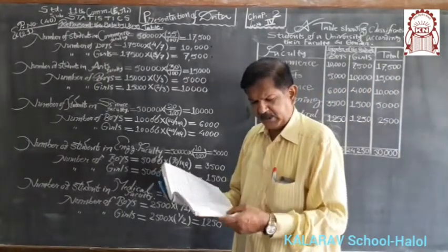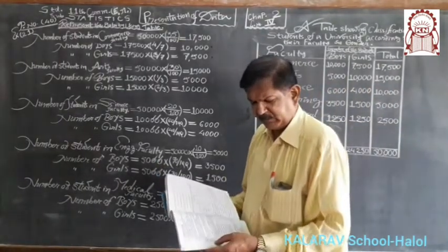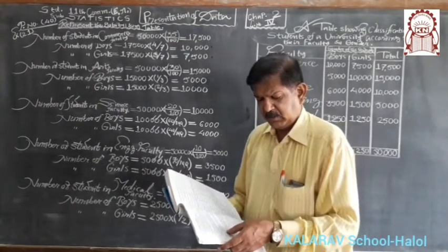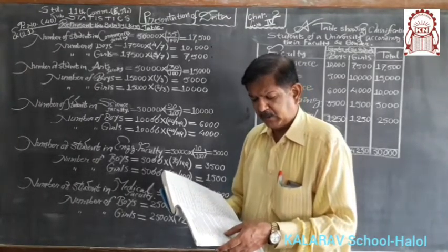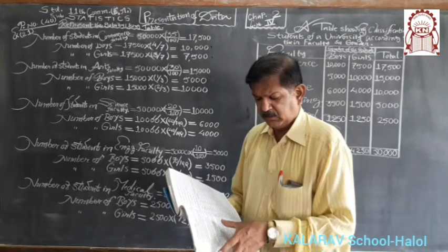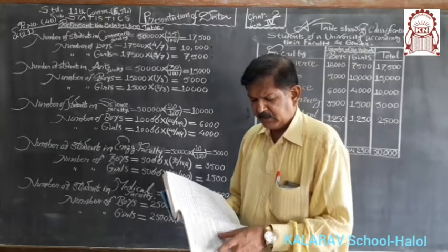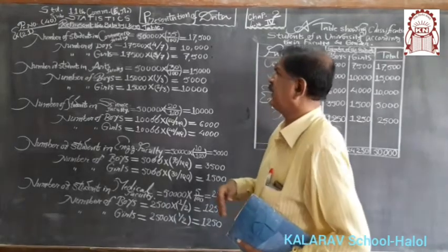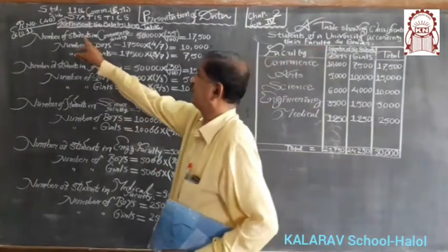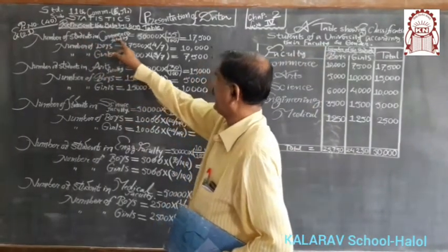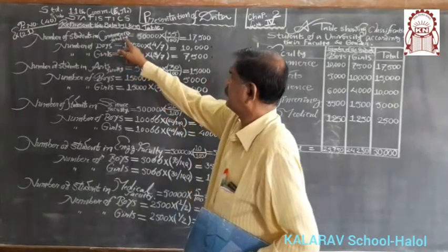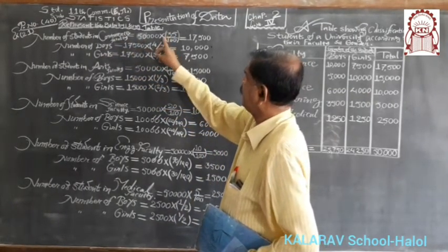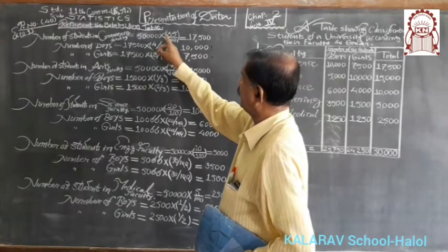Page number 40, question number 21: in a university, out of total 50,000 students, 35% are in commerce. That means the number of students in commerce faculty equals 50,000 multiplied by 35 over 100.